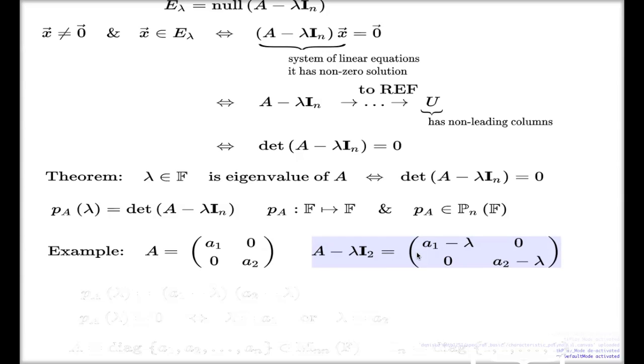So, if I compute the determinant of this, again, it's another interesting feature of diagonal matrices. Determinant of diagonal matrix is, what is it? It's a product of elements on a diagonal. That's how we compute.